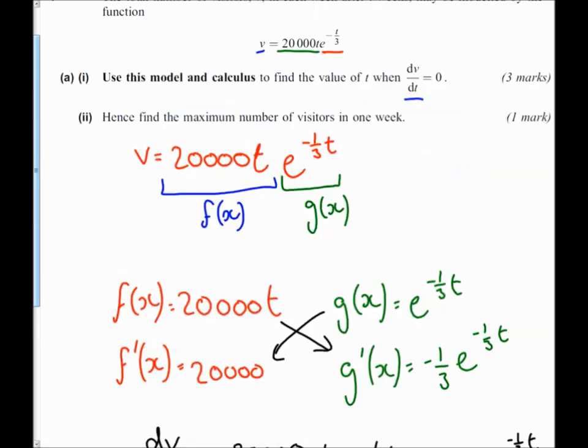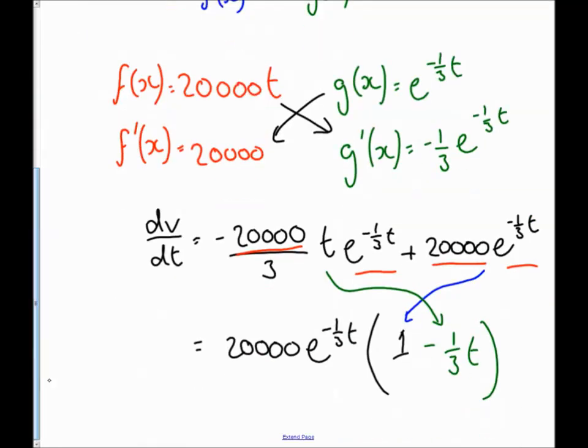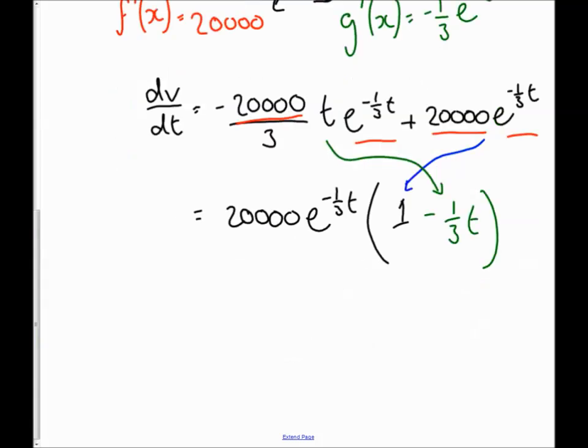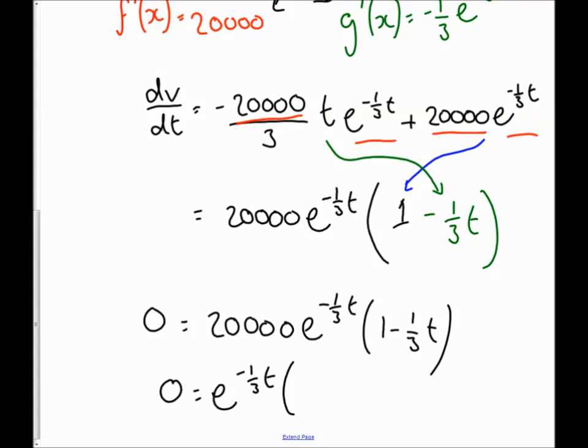Then once you have that, it says use this model and calculus to find the value of t when dv by dt equals zero. So we're going to change our dv by dt to zero. And then I can divide by my 20,000 to start off with, which gives me e to the minus a third t, one minus a third t.